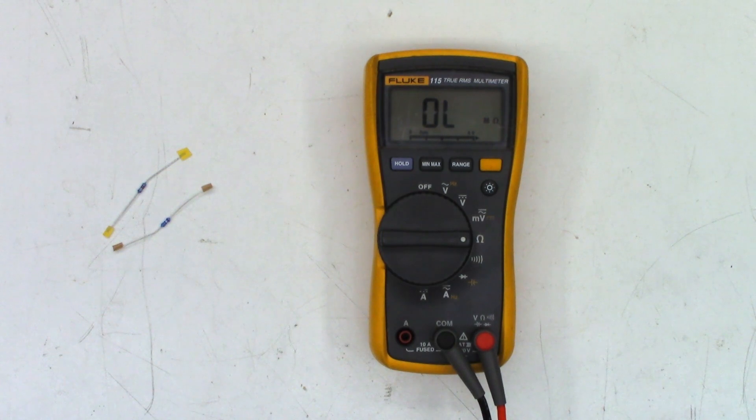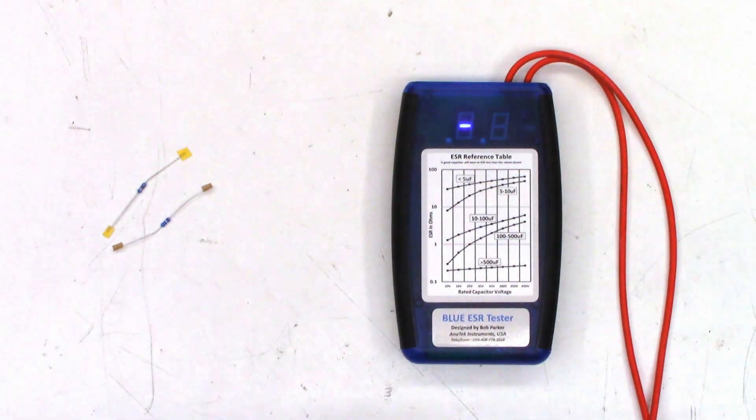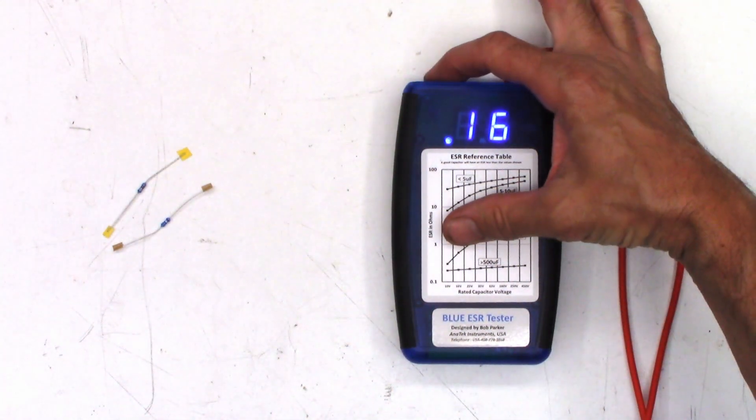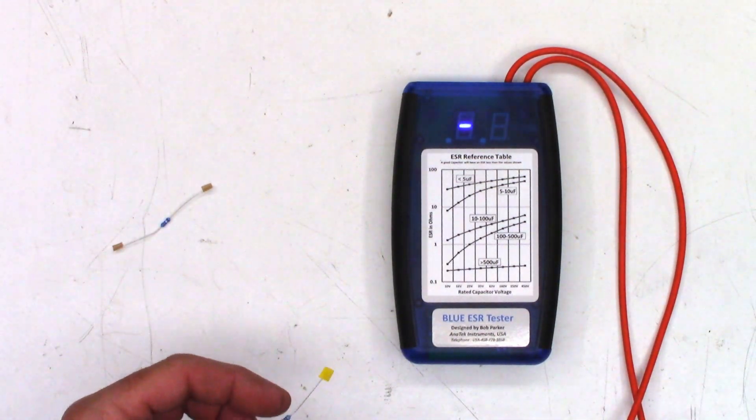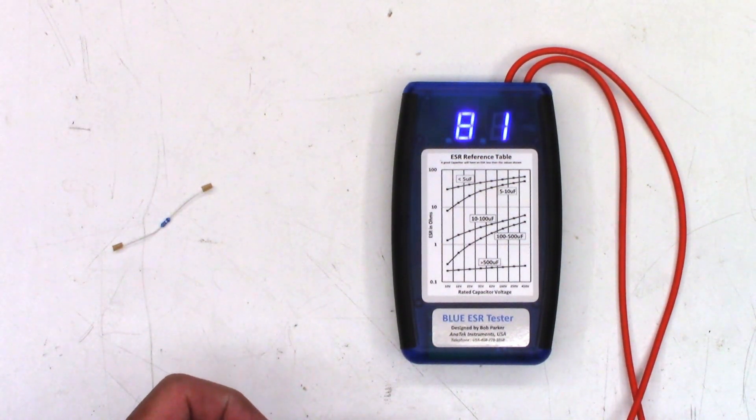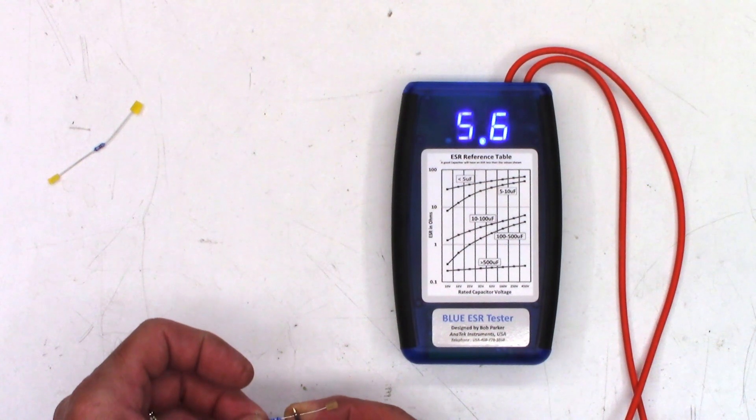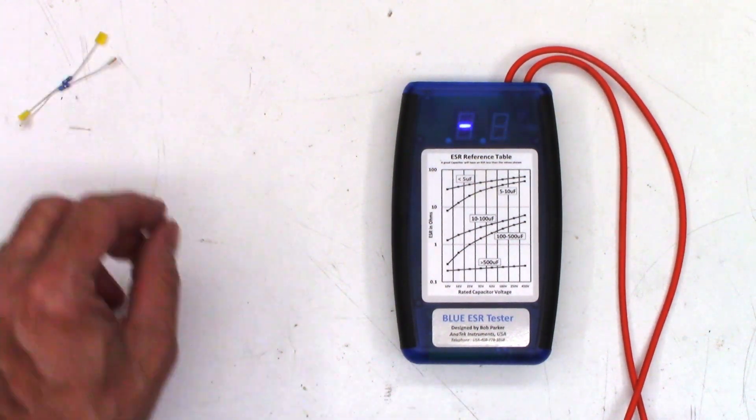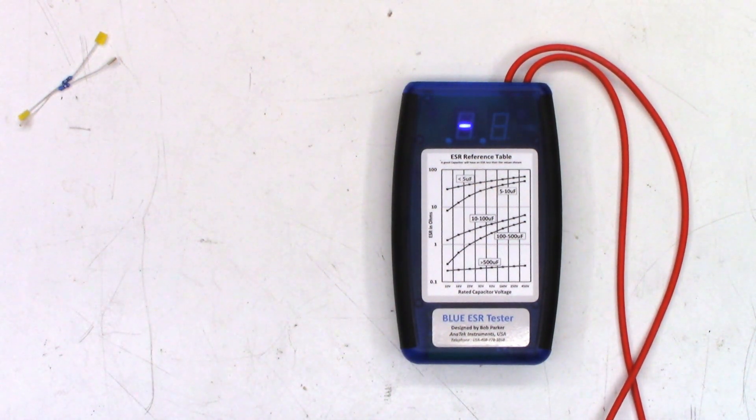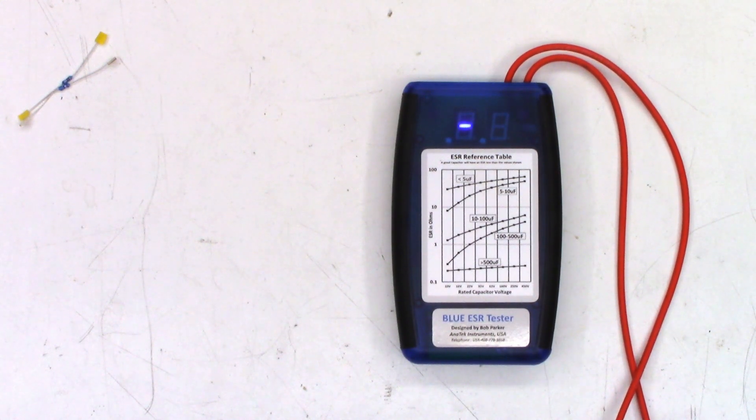5.7 ohms for a 5.6 ohm resistor. So first we'll test the lead integrity, zero out the Blue ESR meter, then we'll test the two resistors and see what kind of value we get. Okay, here we go. Blue ESR meter on, short the leads and we'll zero it out. So first one should be 82 ohms and I'm seeing 80, 81, that's pretty darn close. And we should see about 5.6 on this one and we see exactly 5.6.